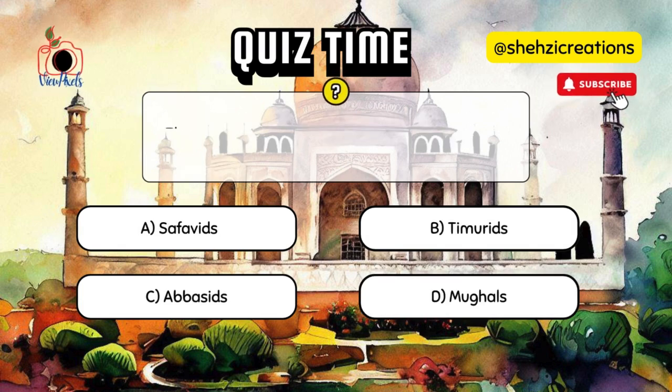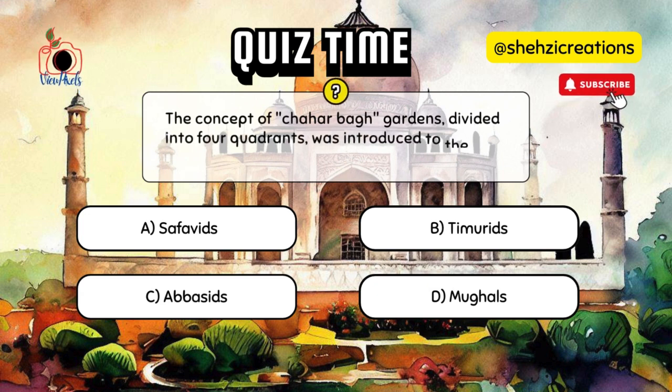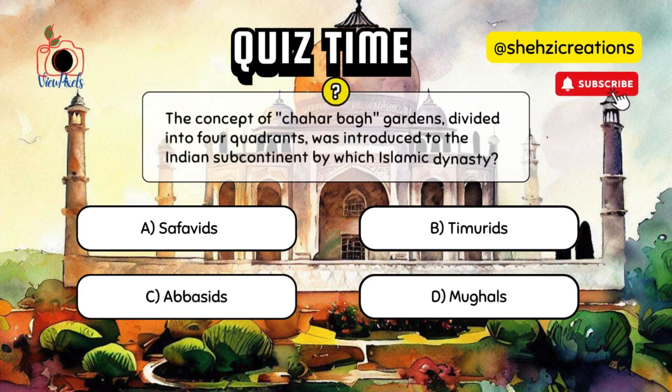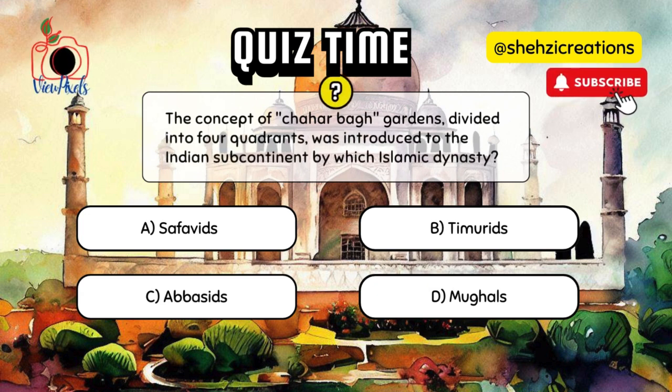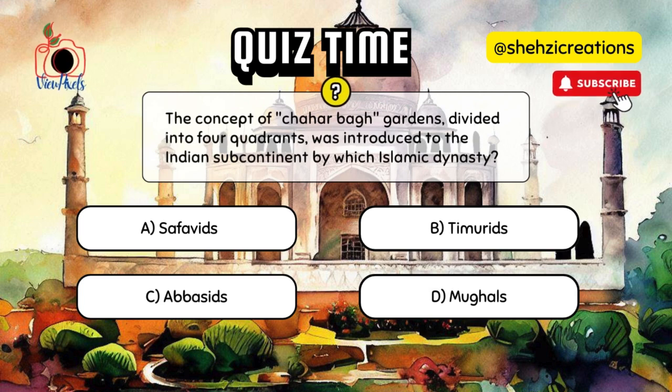The concept of Chahal Bagh Gardens, divided into four quadrants, was introduced to the Indian subcontinent by which Islamic dynasty?